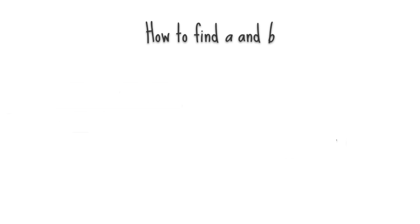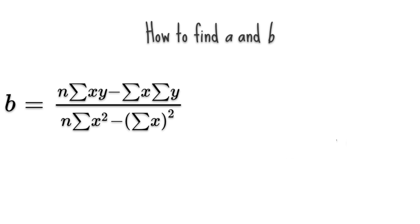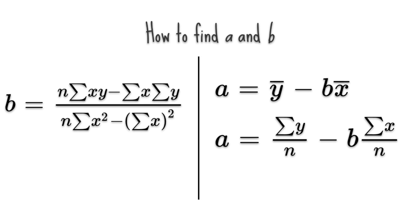These two coefficients are given by two formulae. B equals to n, n is the number of paired observation, times with summation xy minus summation x times summation y divided with n times with summation x squared minus the square of summation x. A is equal to mean of y minus coefficient b times with the mean of x, or summation of y divided by n minus coefficient b times with summation x divided with n.